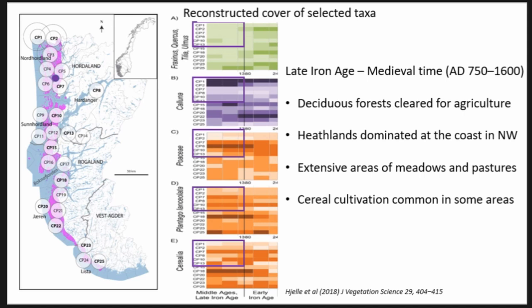The pattern we see around Bergen is also found along the whole coast of Norway. We have used the same methodology to reconstruct the vegetation development, and to the right you see some selected taxa — the darker the color, the more of that taxon. Calluna is especially high in the northern part of the area, showing the importance of heath plants. We also see a decrease in deciduous forests, which were probably nearly completely cleared for agriculture, and we see a large extension of meadows, pastures, and cereal fields.